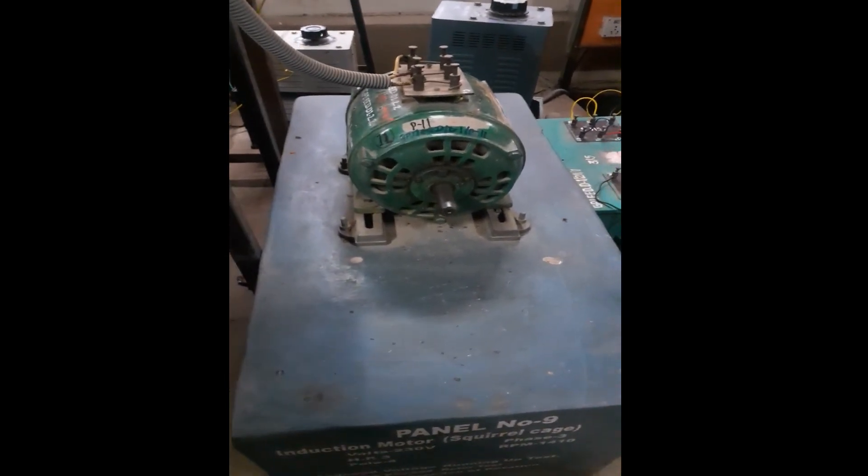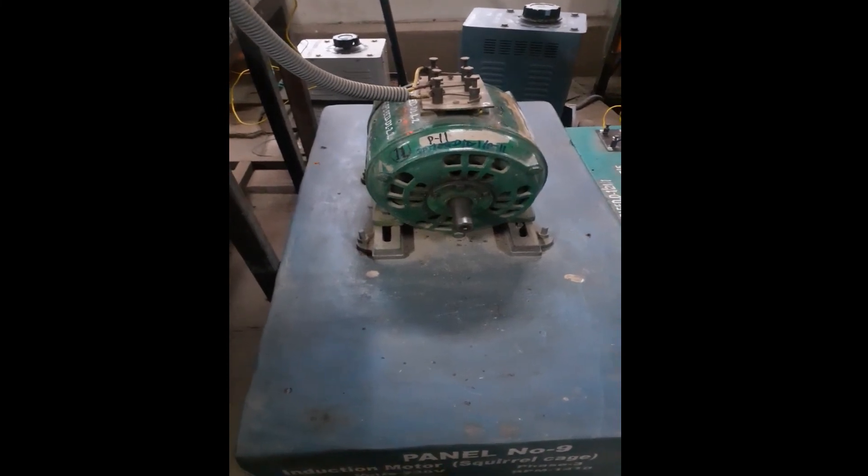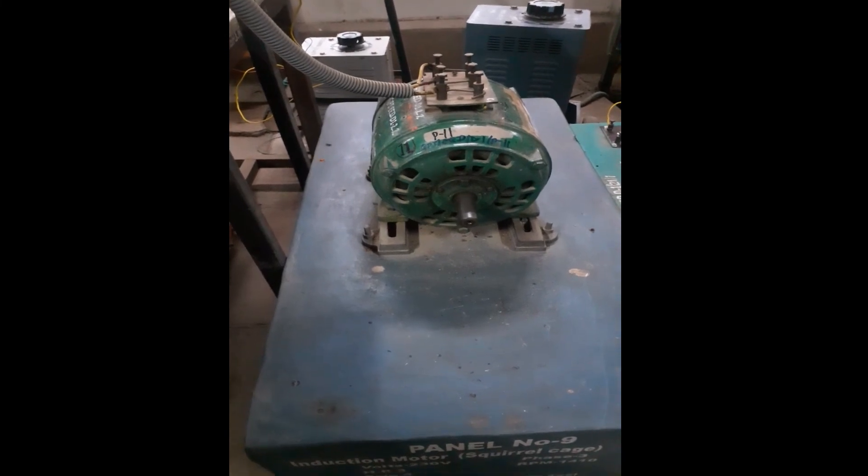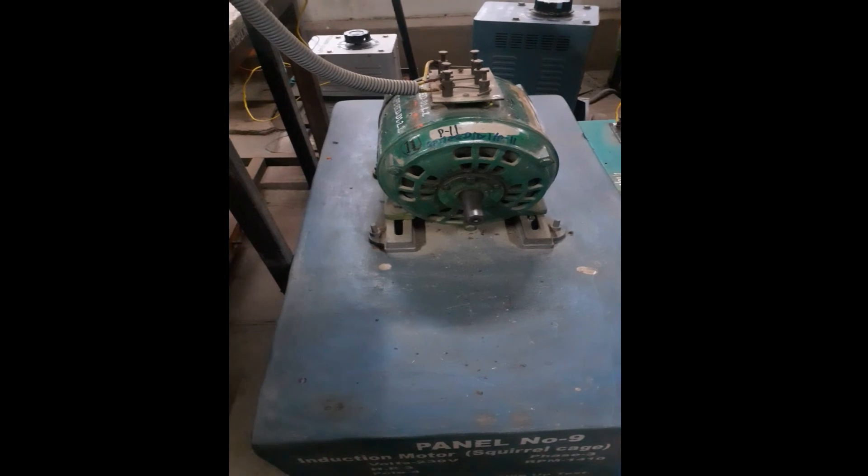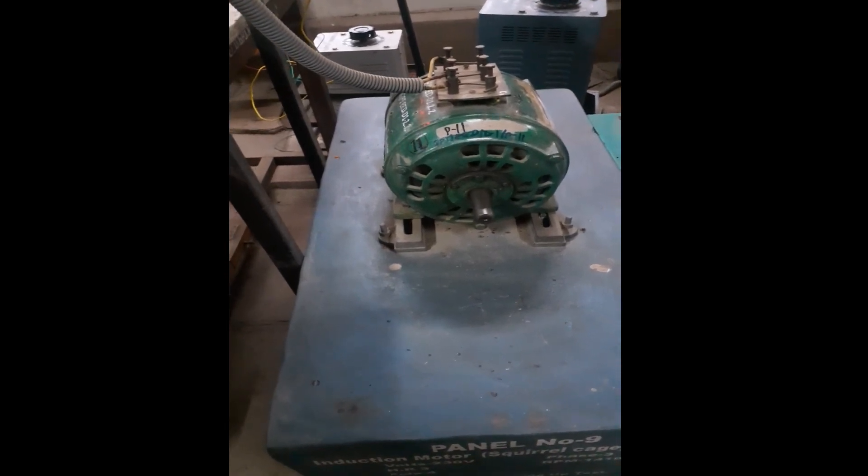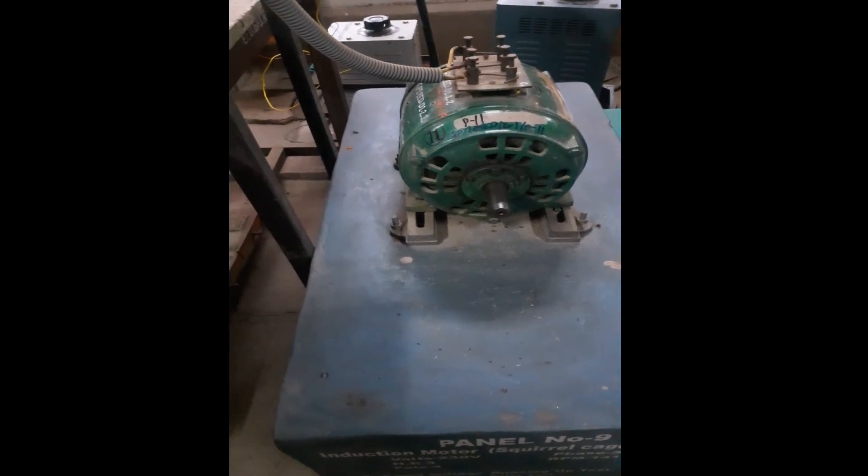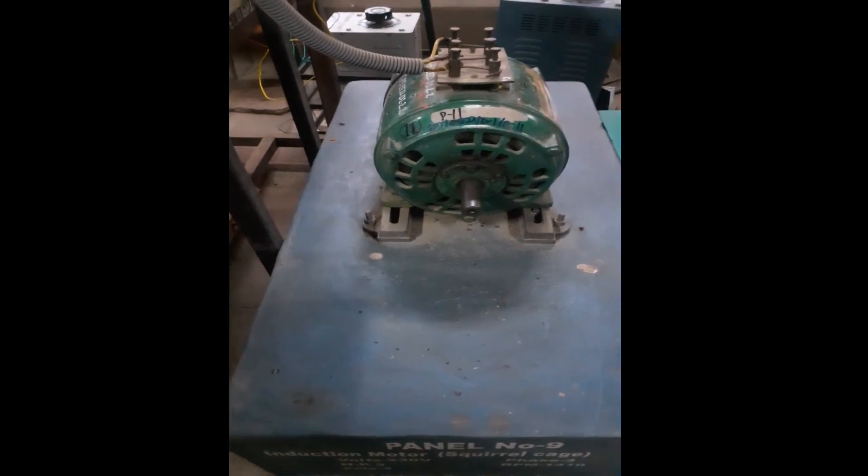Now after taking readings, we are finding it is around 1300, so it means motor is running with its normal speed. That means there is no 7th harmonic present in this particular motor or there is no cogging and crawling effect in this particular induction motor. Our experiment is successfully conducted and this test is okay.